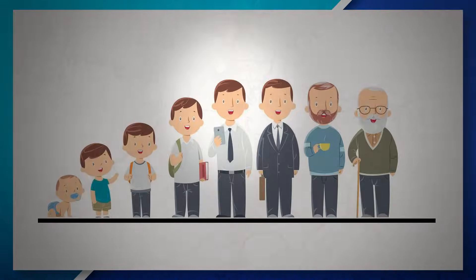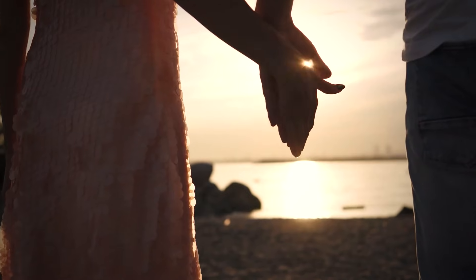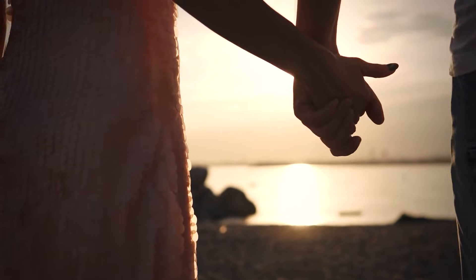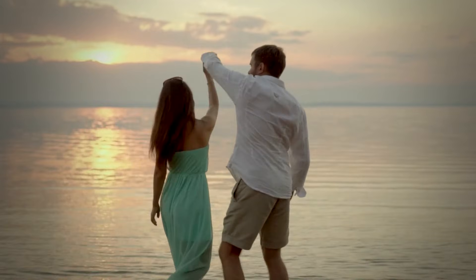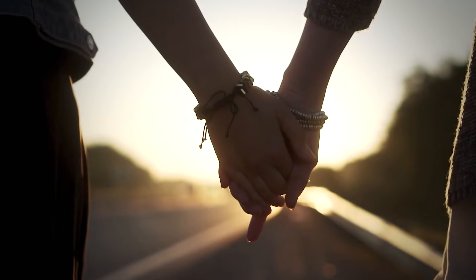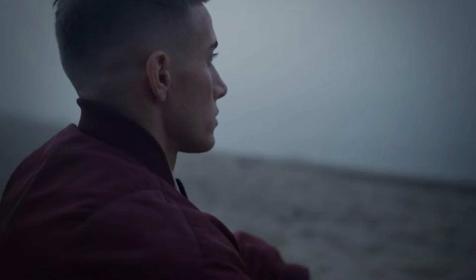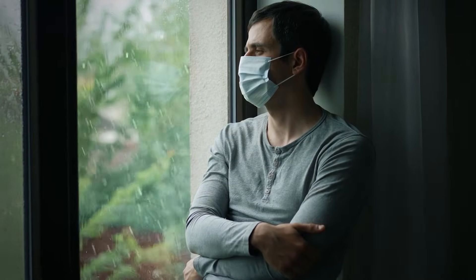After identity versus role confusion, an individual moves into the next stage, which is intimacy versus isolation. Here, young adults seek meaningful relationships with others, find something they are passionate about, and pursue a career. Significant life events during this stage may include advancing in one's career, starting a business, getting married, or starting a family. Being able to successfully navigate this stage often leads to more intimate, lasting relationships and a feeling of purpose. But if an individual is not able to find something they are passionate about, they may feel isolated and disconnected from society.